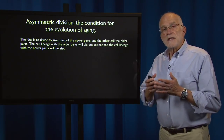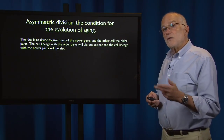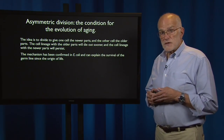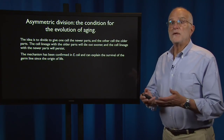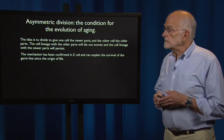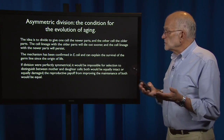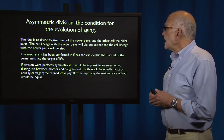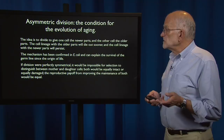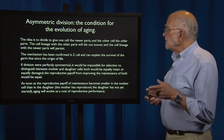The idea is that if in division one cell can be given the newer parts and the other cell the older parts, the cell lineage with the older parts will die out and the cell lineage with the newer parts will persist. This mechanism has been confirmed in E. coli, which appears to divide symmetrically but turns out it does not, and it can explain the survival of the germline since the origin of life.